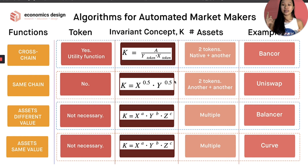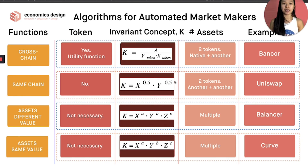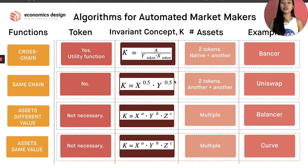The last model is assets with the same value — that's Curve. You also don't need a token here because these similar-value assets are already frequently traded. The invariant concept is similar to Balancer's, but the key difference is that Balancer can hold any mix of different assets like LISA tokens, DAI, ETH, or WBTC, whereas Curve focuses on similarly-valued assets — for example, WBTC versus renBTC — assets with similar valuations and nearly identical underlying assets.